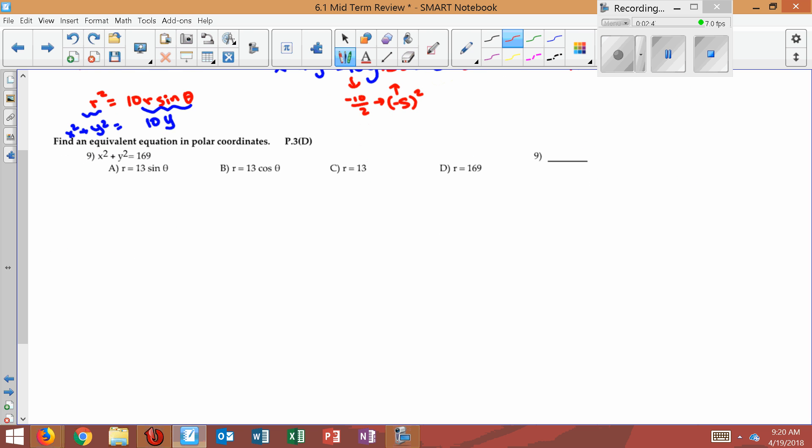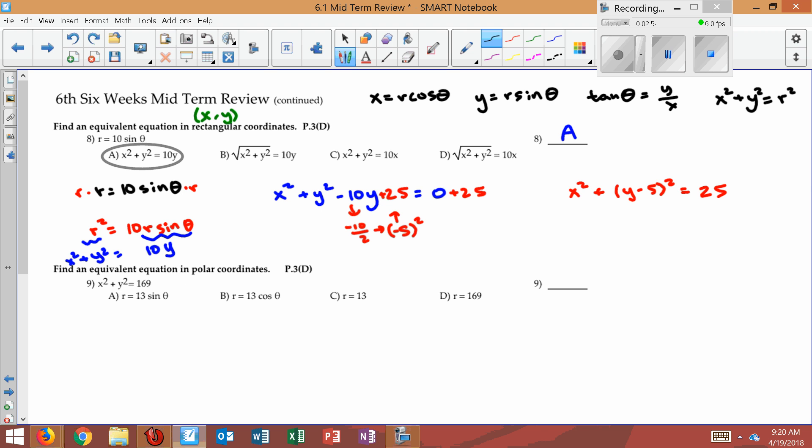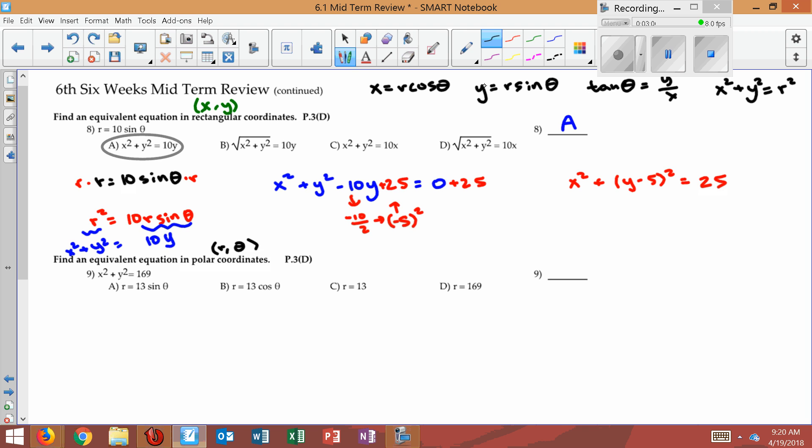Problem 9. We have x squared plus y squared equals 169. This time, it's the same type problem, but we want it in polar coordinates, which means in terms of r and theta. So we're going to use the same four formulas. We have x squared plus y squared equals 169. Well, right away, I can see that x squared plus y squared, that's a formula. That's equal right here. This is equal to r squared. So r squared equals 169.